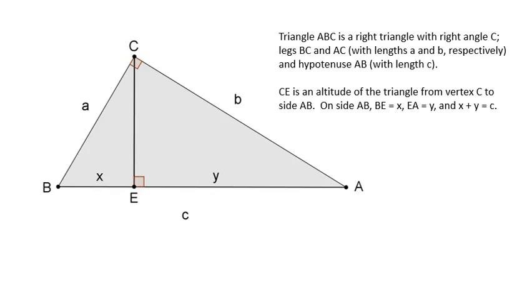What I have here is triangle ABC. In this triangle, you've got legs CB and CA with lengths a and b, and the hypotenuse is AB which has length c. Notice that C is the right angle.